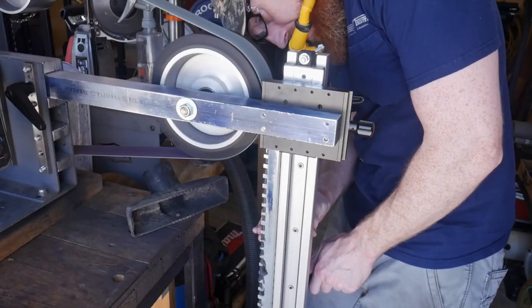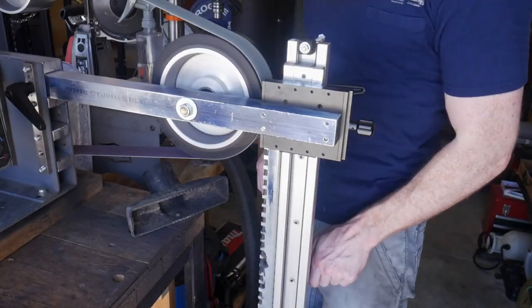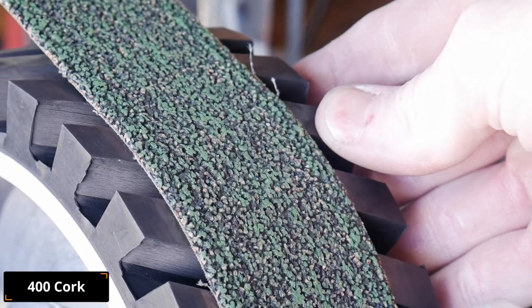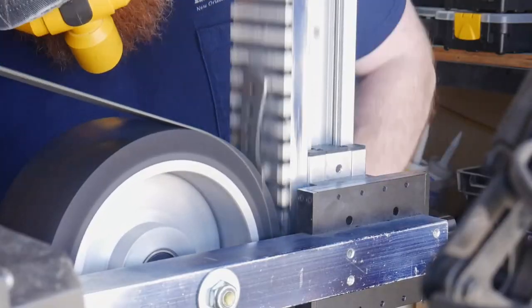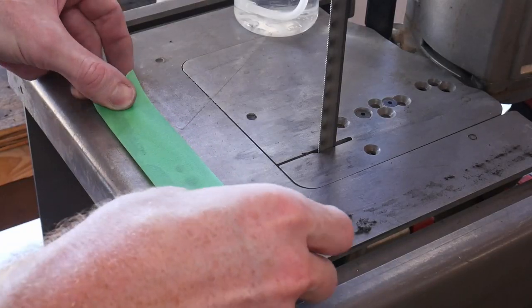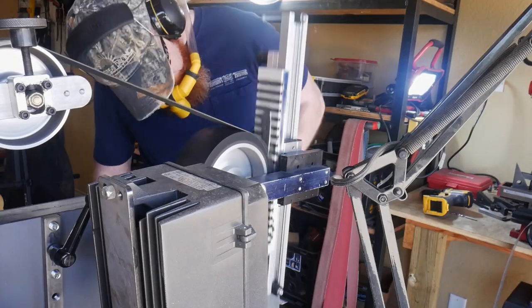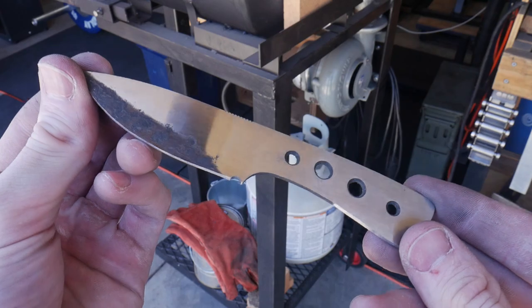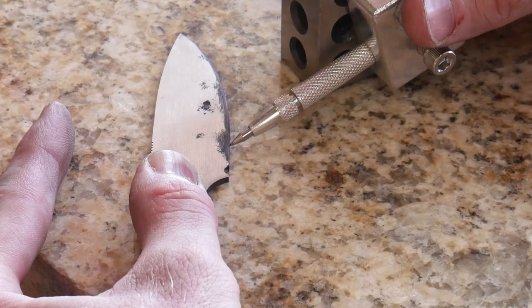On the surface grinder, I start with a 220 grit belt, move to a 360 grit gator belt, then a 400 grit cork belt for my finish on the flats. Not only does this give me a nice flat surface to glue handle scales to, it also allows me to have a nice surface finish across the blade to ease my hand sanding.